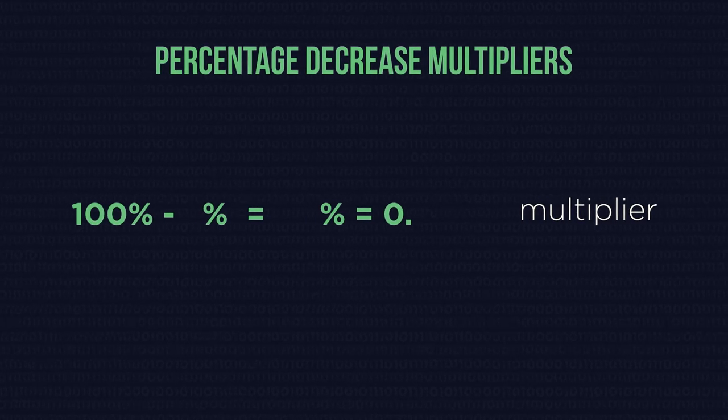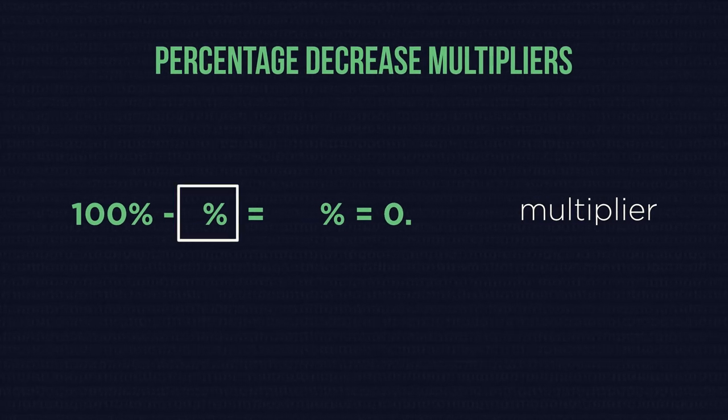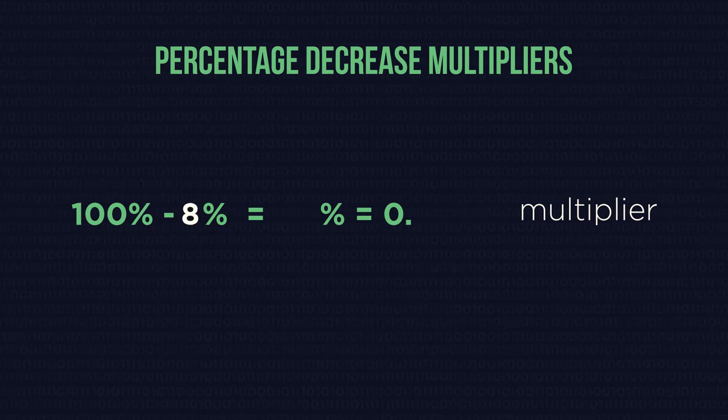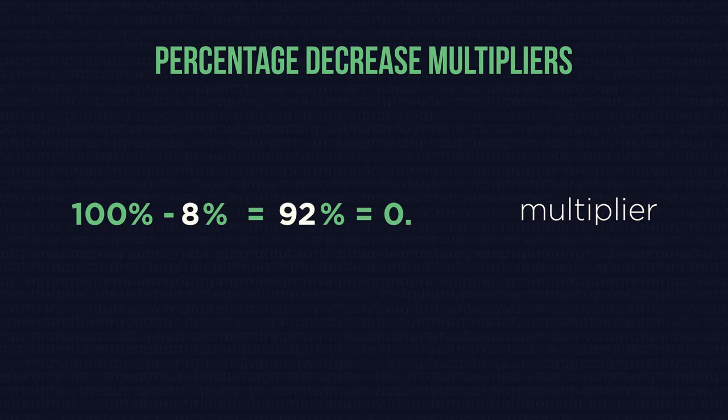For percentage decrease multipliers, we need to subtract the percentage from our starting 100 percent and then turn it into a decimal. So 100 take away 8 is 92 percent, which as a decimal is 0.92.